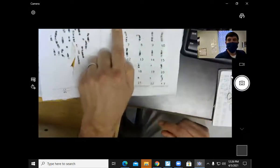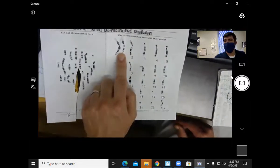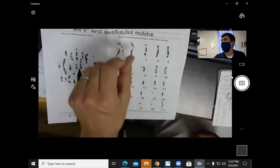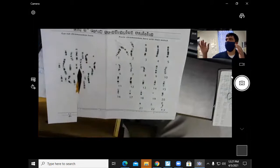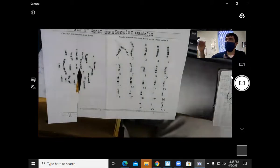All right. So you can see how I did my first chromosome. The chromosomes are going to be homologous. That means they're going to be the same size, same banding pattern, same genetic content.